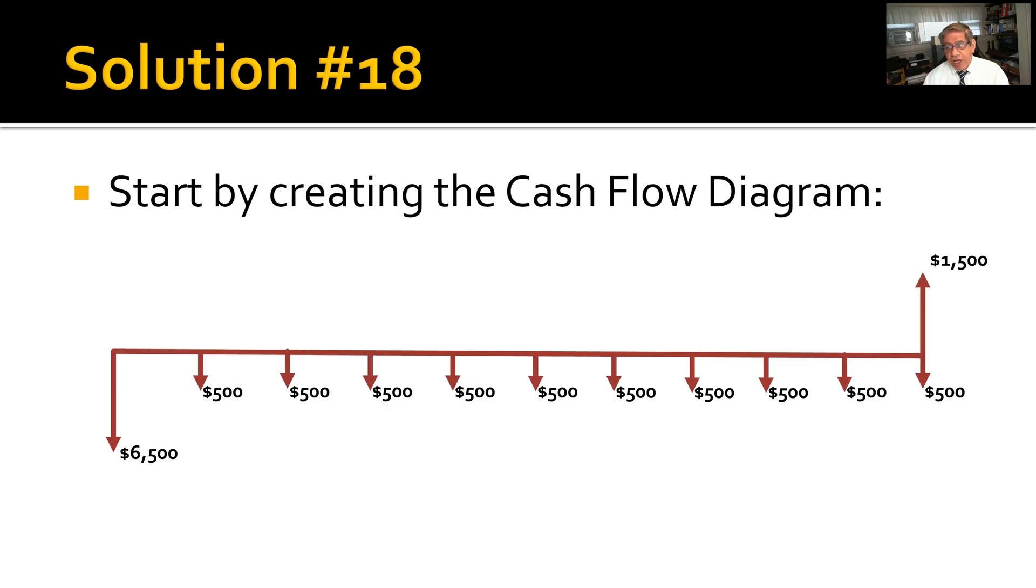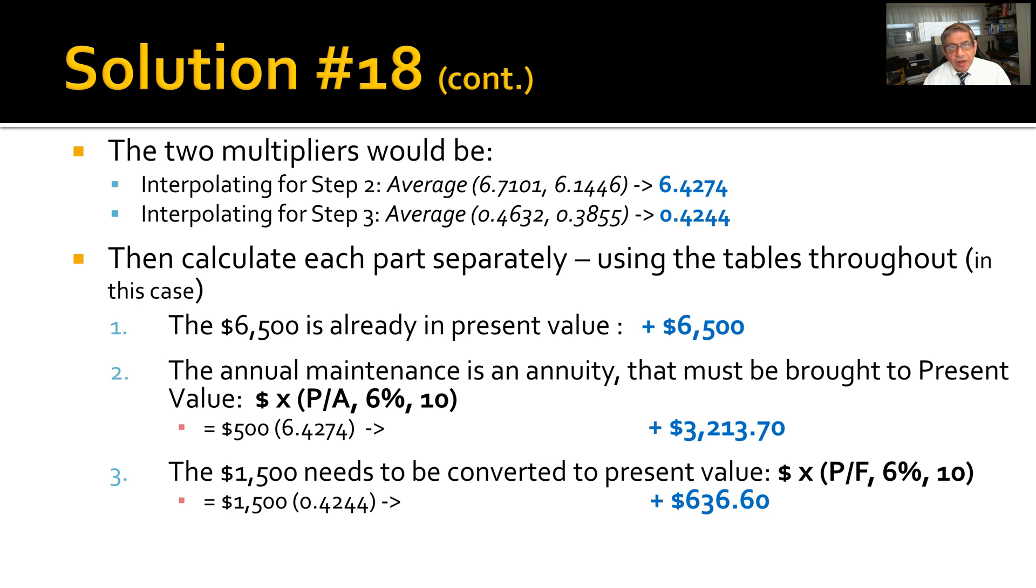Solution number 18: Start again by creating a cash flow diagram. In this case, you start out with the initial outlay of $6,500, a salvage value of $1,500, and $500 each year for maintaining that equipment. You can't find in the tables the actual percentage of interest that this problem requires, so you have to pick the value before it and the value after it, then do a linear interpolation. We had to do that for both step two and step three. Out of the table, you see the values that we came up with and what the final interpolation of each of those was.